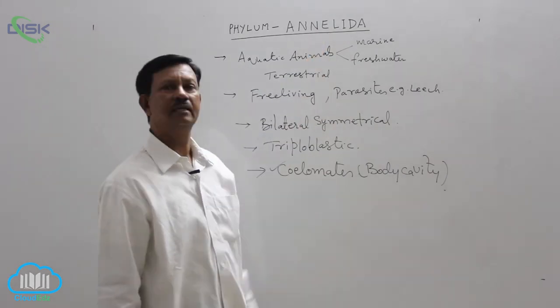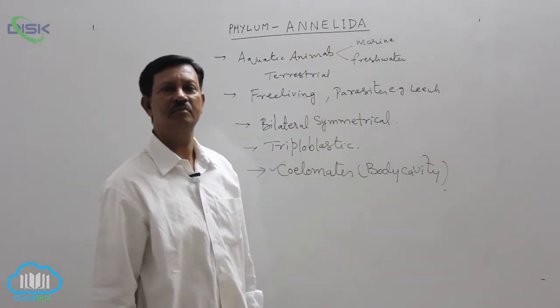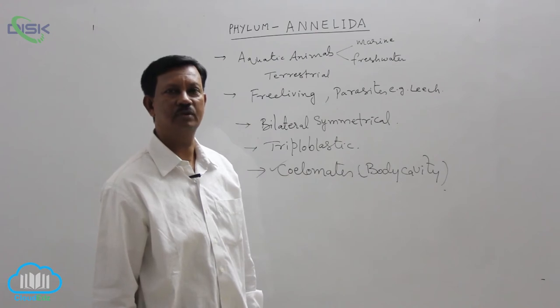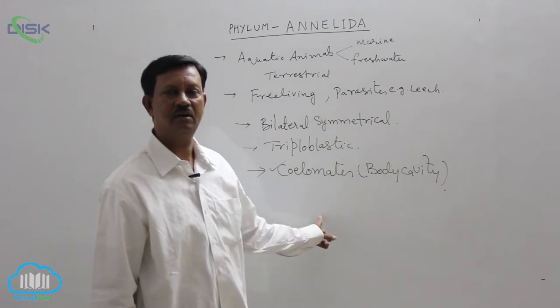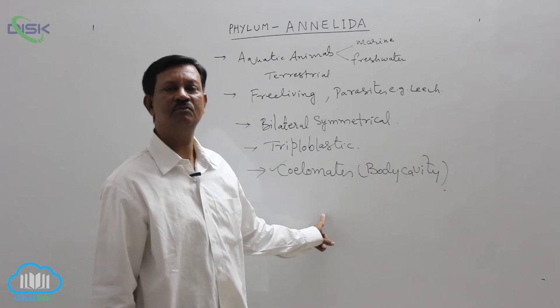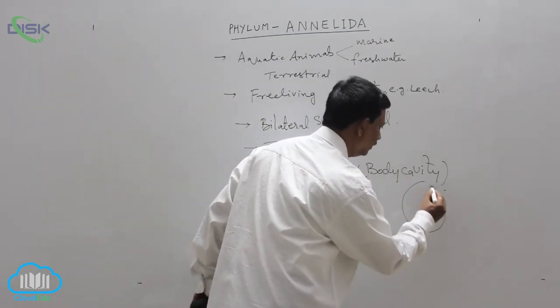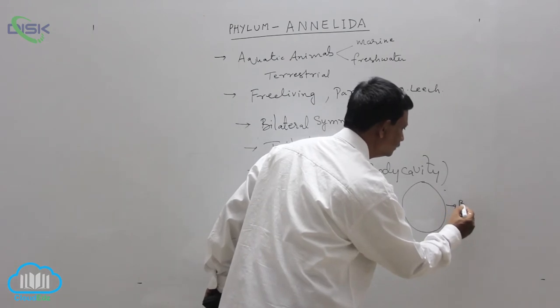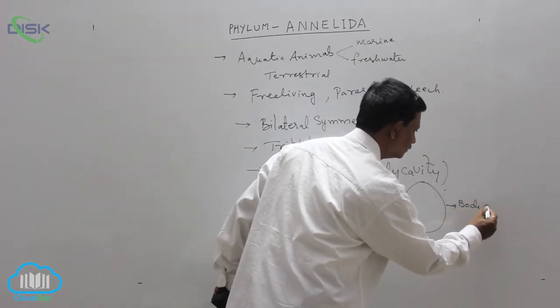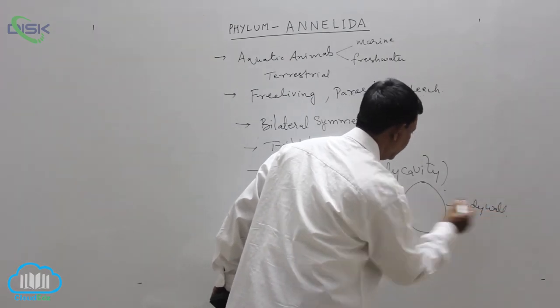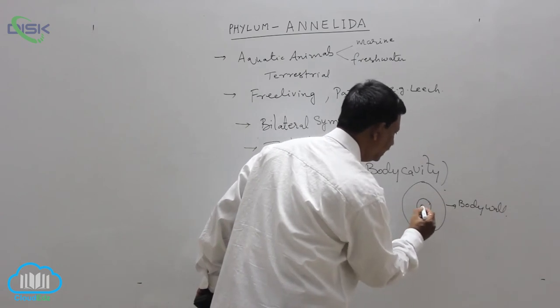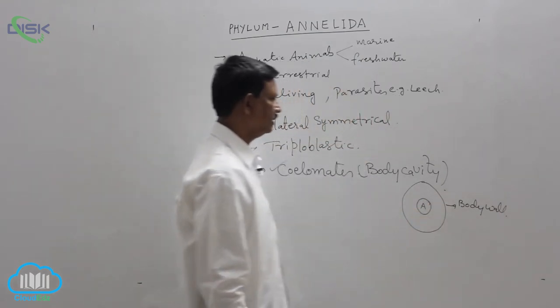What is true coelom means? The cavity which is present in between the intestine and body wall is known as the body cavity or coelom. For example, you can take this is the body wall. And in the middle region, alimentary canal or intestine is present.